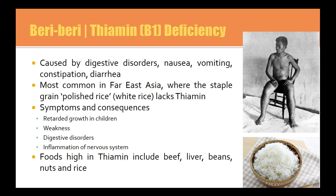Beriberi is B1 or thiamine deficiency — a digestive disorder that causes nausea, vomiting, constipation and diarrhoea. It is most common in Far East Asia, where the staple food — white rice — lacks thiamine. If you're not consuming thiamine, you'll develop a deficiency. Consuming foods high in thiamine will help prevent that deficiency from occurring.